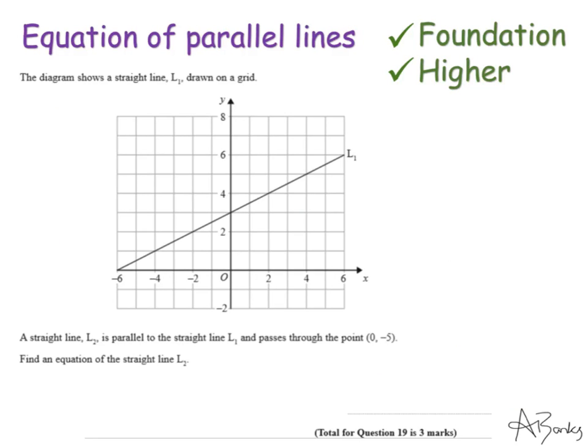Here's the third type of question they can give me on parallel lines. This question says, the diagram shows a straight line L1 drawn on a grid. The straight line L2 is parallel to the straight line L1 and passes through the point 0 minus 5. Find an equation of the straight line L2. So the straight line L2, I'll need to know its gradient and its y-intercept. Well, its gradient will be the same as the gradient of the line L1 because it's parallel to it. So I need to find the gradient of this straight line.